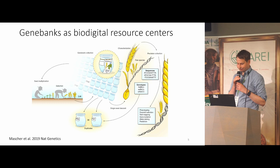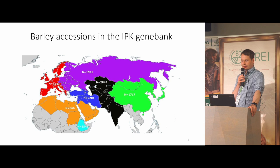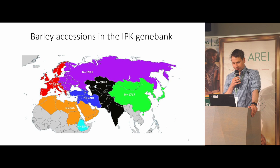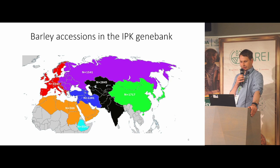In the first step we genotyped our entire barley collection with genotyping by sequencing, and the next step is to do genomics or pan genomics on a small subset. This map shows the origin of barley accessions in our gene bank — those that originate from the old world. We have about 4,000 accessions from Europe, but also decent representation of other parts of the world.